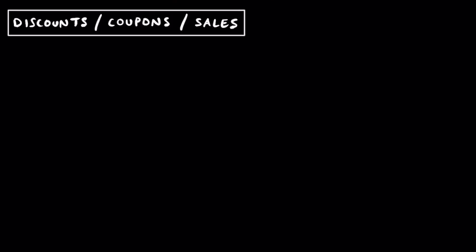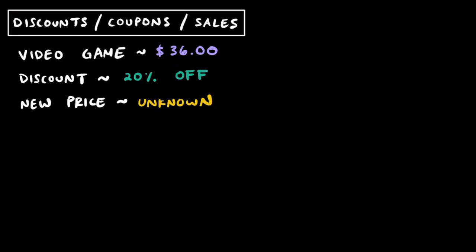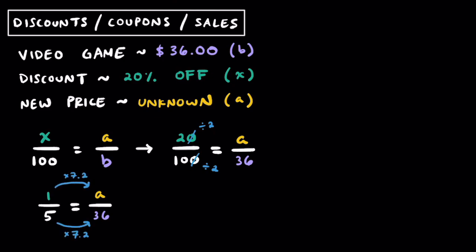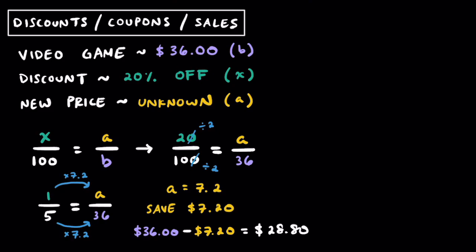Let's say we have a video game that originally costs $36. There's some sort of discount or coupon going on and you're going to get 20% off this price. B is going to represent the $36, X is the discount of 20%, and A is our unknown. We set up our percent proportion as 20 over 100 equals A over 36. Simplifying the left side by dividing by 10 then by 2, we get 1 over 5 equals A over 36. Since 5 times 7.2 equals 36, then A equals 7.2 — so we're going to save $7.20 off the video game. Subtracting that from the original, the final cost we'll pay is $28.80, ignoring tax.